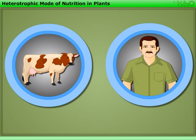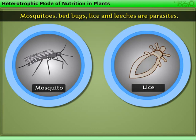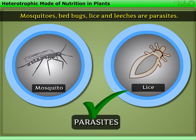Note that although humans and animals depend on plants for their food, they are not parasites. This is because they do not deprive the plants of their essential nutrients. However, mosquitoes, bedbugs, lice, and leeches are parasites because they suck human blood and depend on them for their food.